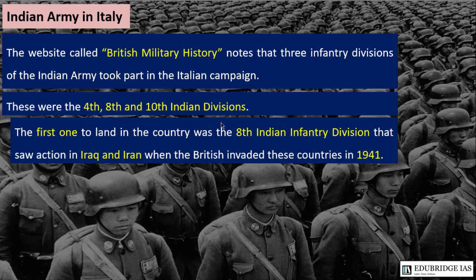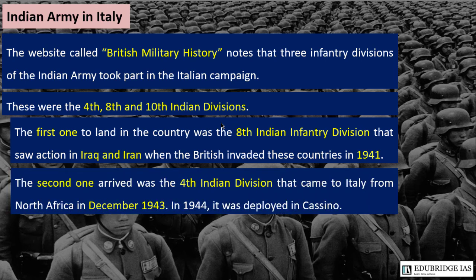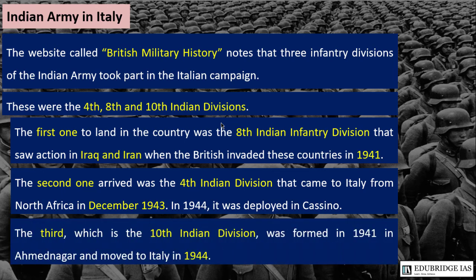The first to land in Italy was the 8th Indian Infantry Division, which had seen action in Iraq and Iran when the British invaded those countries in 1941. The second was the 4th Indian Division, which came to Italy from North Africa in December 1943 and was deployed at Cassino in 1944. The third was the 10th Indian Division, which was formed in 1941 in Ahmednagar, India, and moved to Italy in 1941.